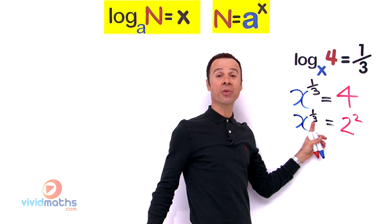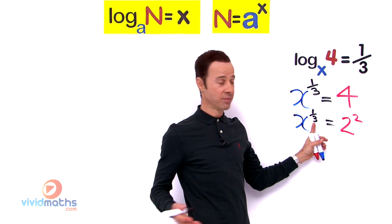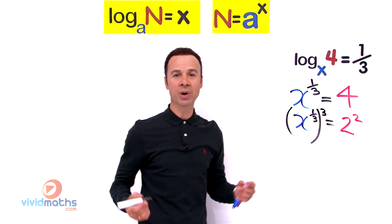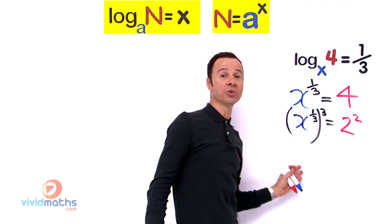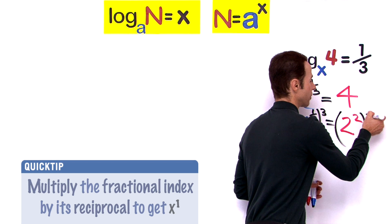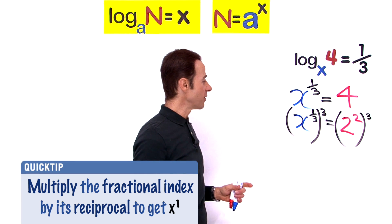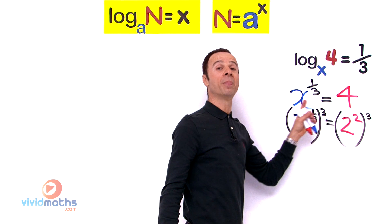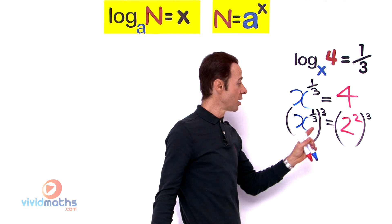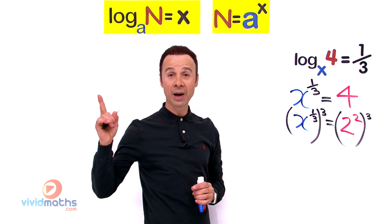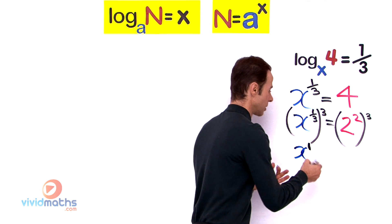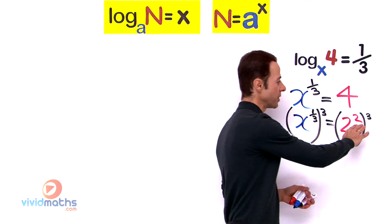We multiply by the reciprocal. The reciprocal of one third is 3 over 1, which is just 3. So we raise both sides to the power of 3. On the left side, x to the power of one third, raised to the power of 3: by exponent laws, we multiply the powers — one third times 3 equals 1. So we get x to the power of 1.